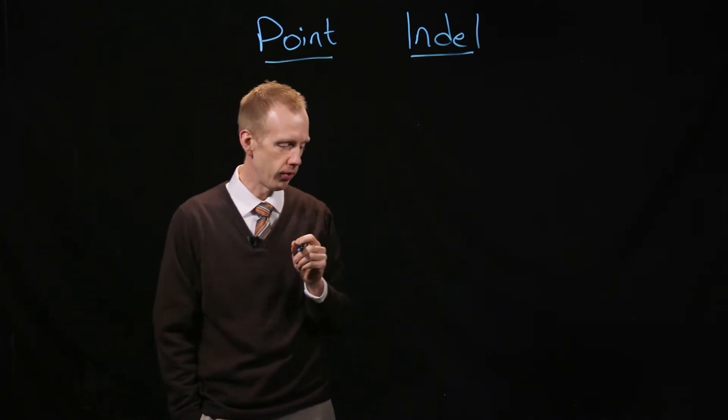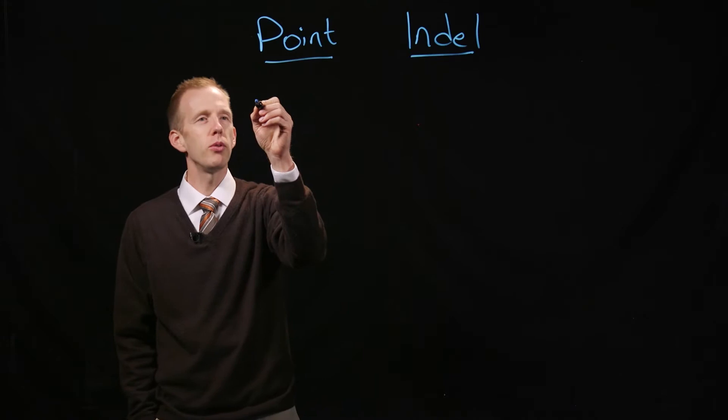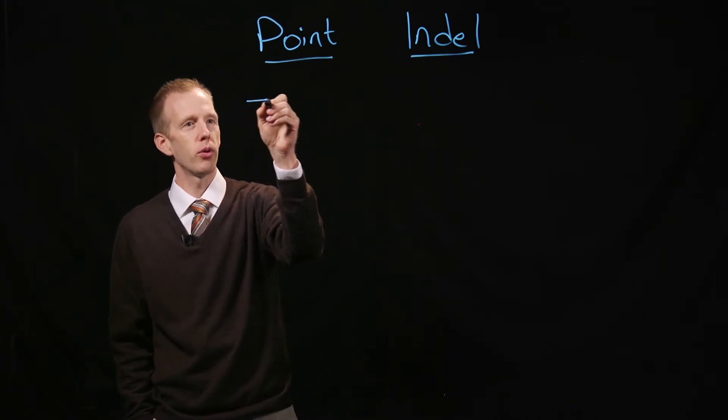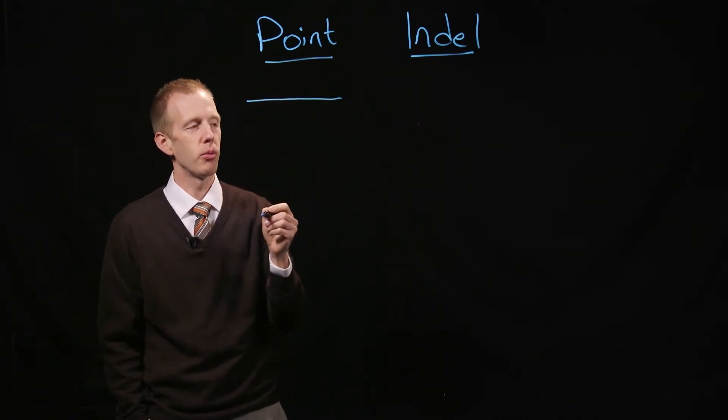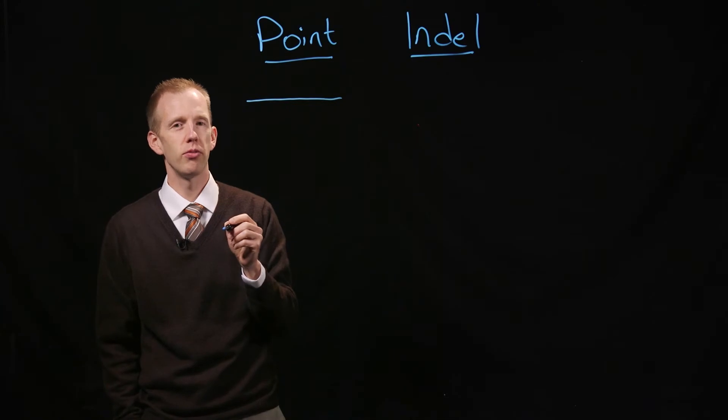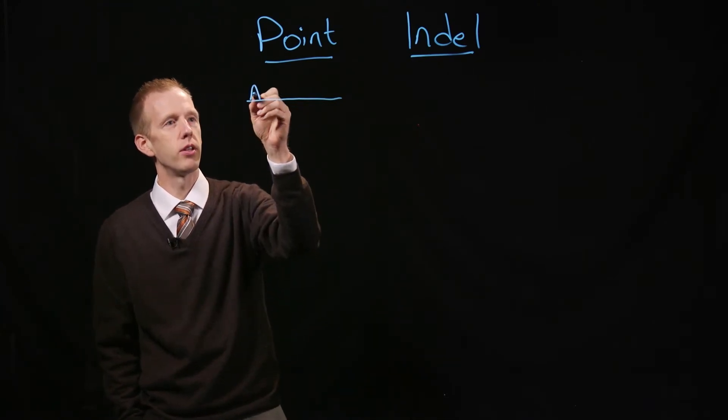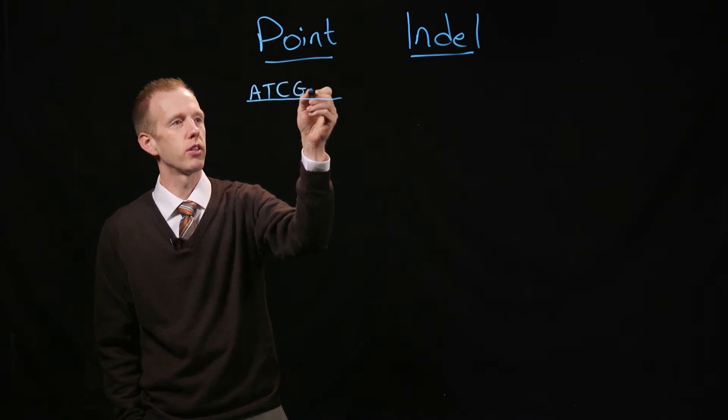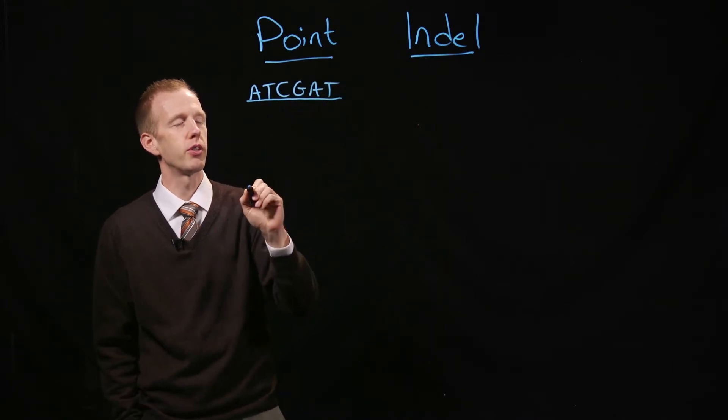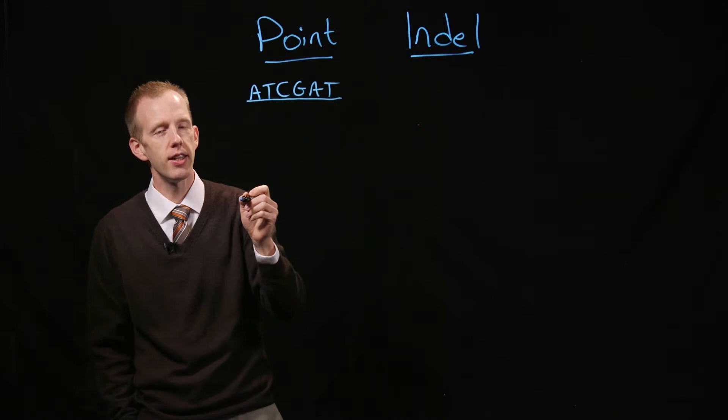I'm going to give you a couple of examples. So a point mutation, you might have one individual. Remember a horizontal line might be a representation of a double-stranded molecule of DNA, a chromosome. If we look at one sequence, or one part of that sequence, let's just draw out a random sequence here that could be ATCGAT.